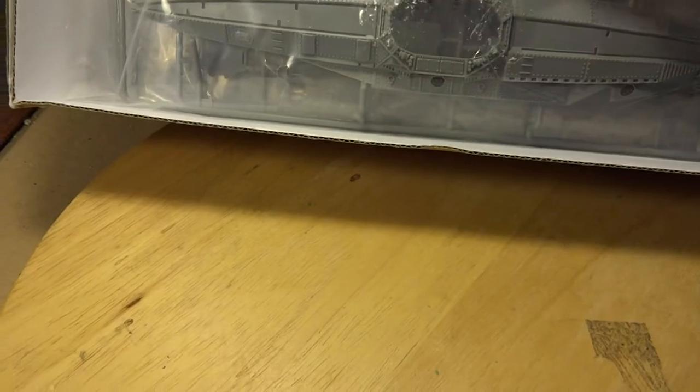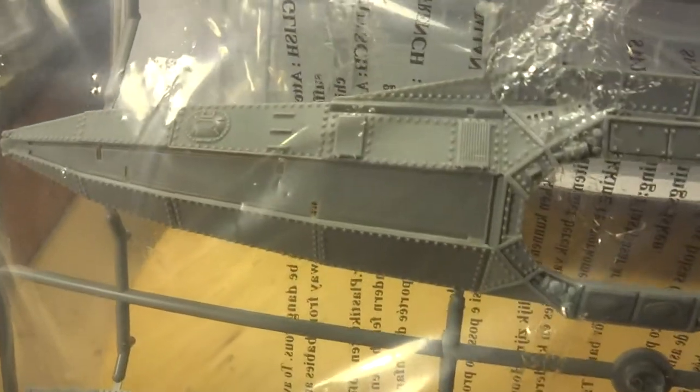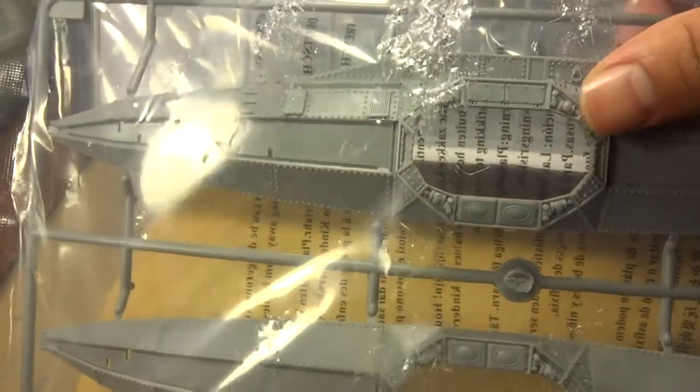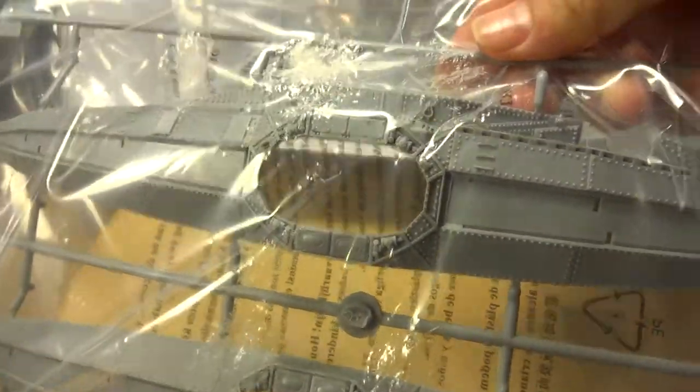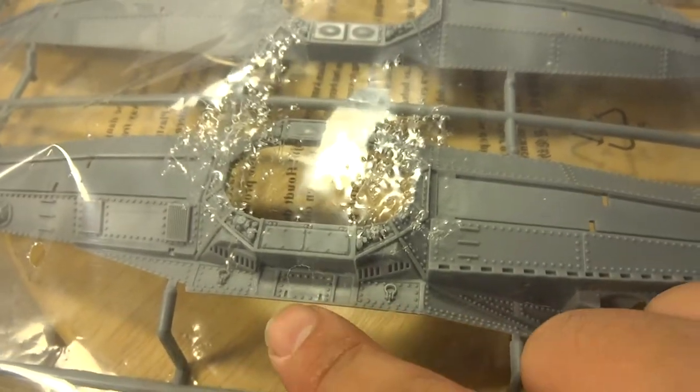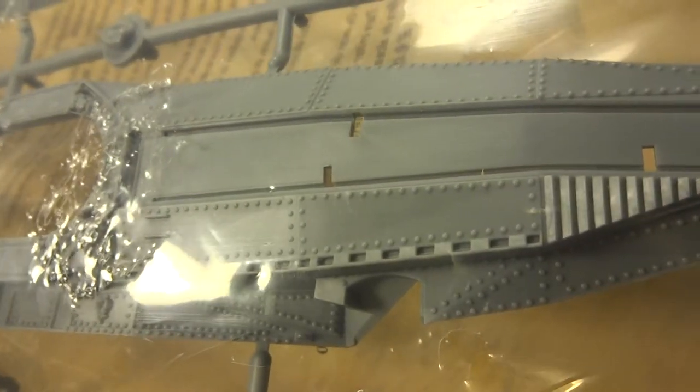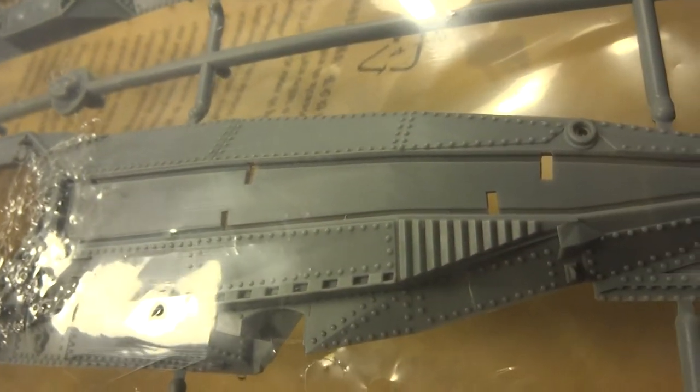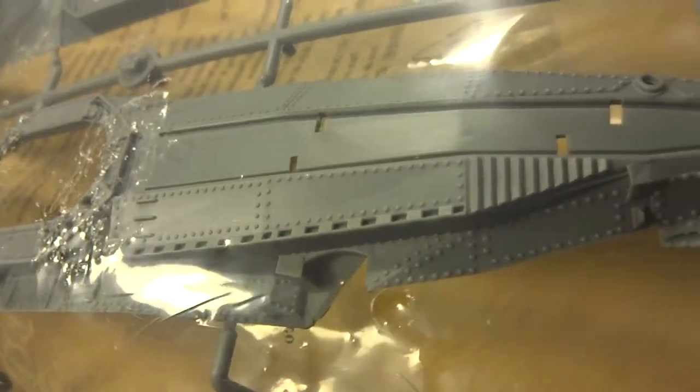Next up, this looks to be the sides of the Nautilus. This is where the giant Victorian window is going to go on both sides. This looks to be the top here, and just amazing detail they've given us with all these wonderful tiny rivets.